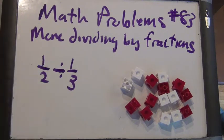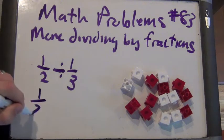So the first one, 1 half divided by 1 third. How would you like to think about this problem? Well, maybe we could use the reciprocal trick.